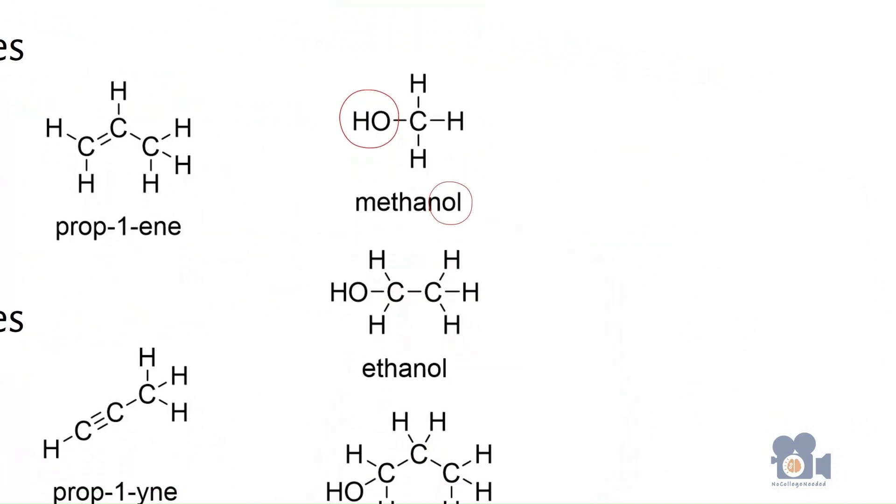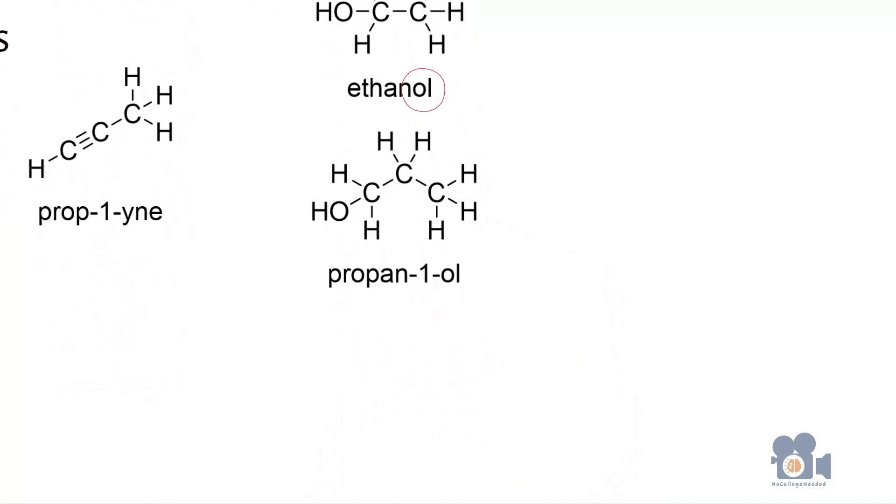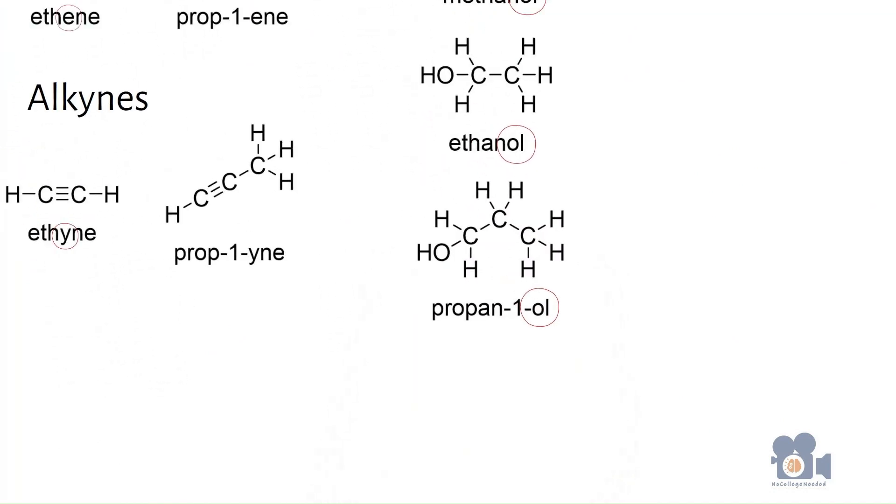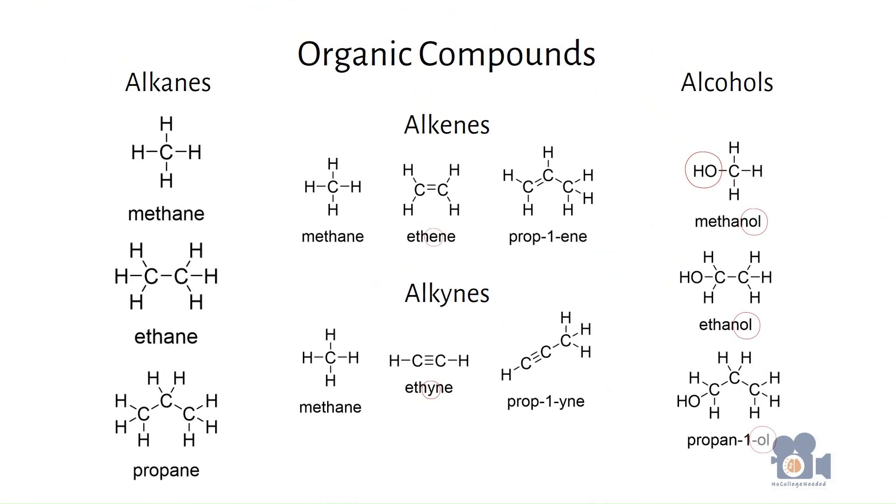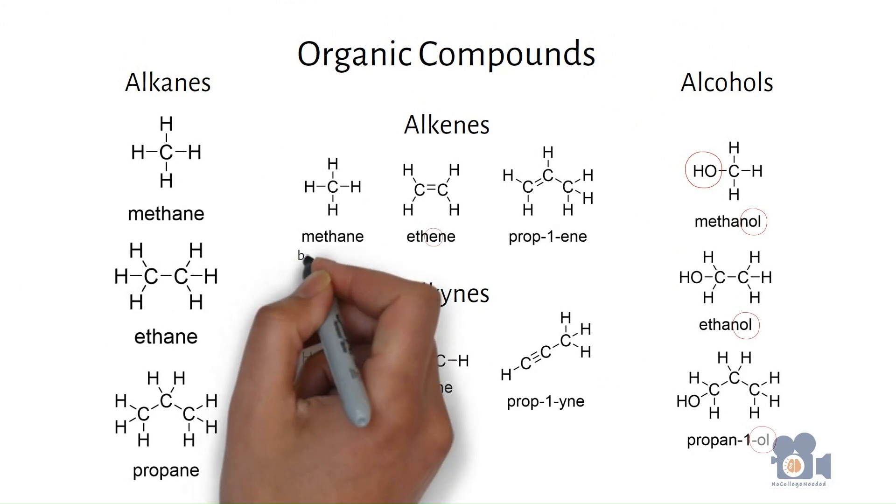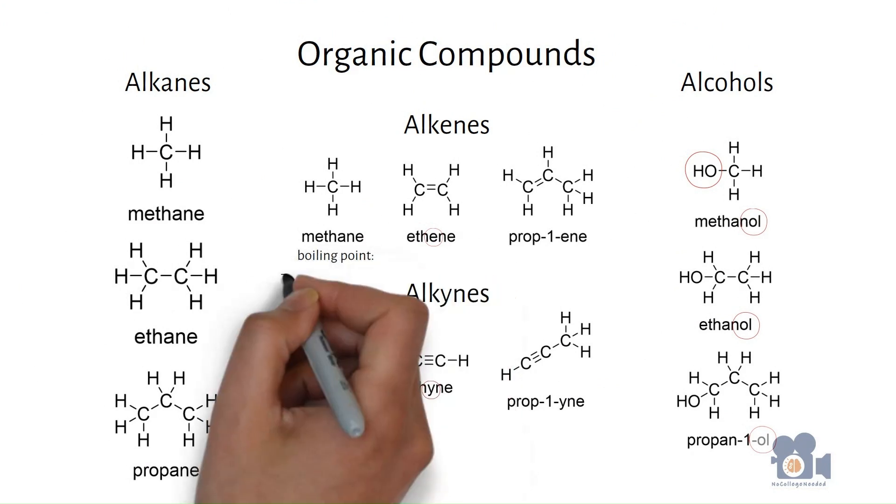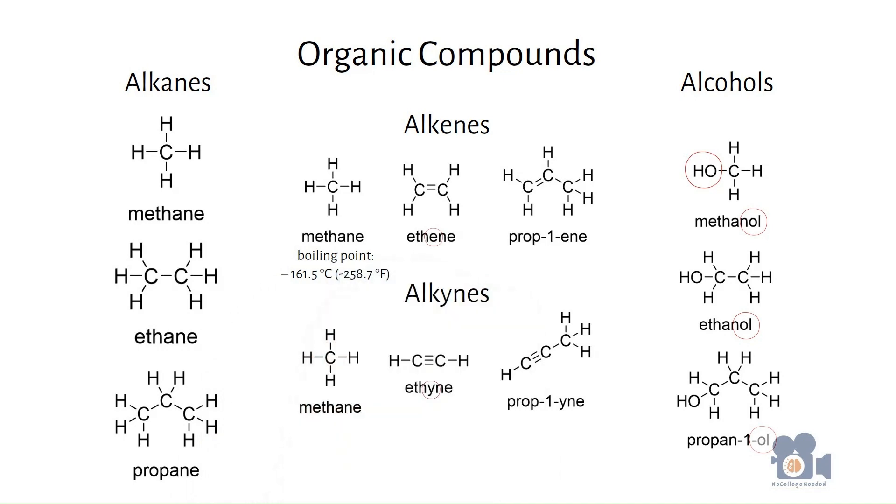and we add an OL to denote alcohols, which also have different properties than alkanes. For example, the boiling point of methane is negative 161.5 degrees Celsius, or negative 258.7 degrees Fahrenheit,